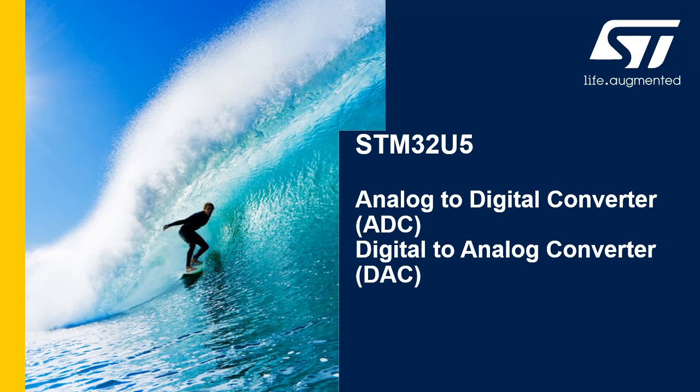Hello and welcome to this presentation of the STM32U5 Analog-to-Digital Converters, or ADCs, and Digital-to-Analog Converter, or DAC. It will cover the main features of ADC1-2 and ADC4, which are used to convert analog voltages, such as sensor outputs, to digital values for further processing in the digital domain. The DAC is used to convert digital signals to analog voltages, which can interface with the external world and also with on-chip peripherals such as comparators and operational amplifiers.